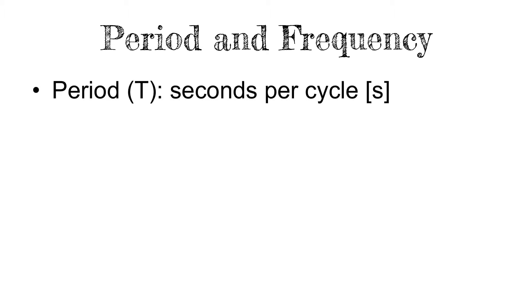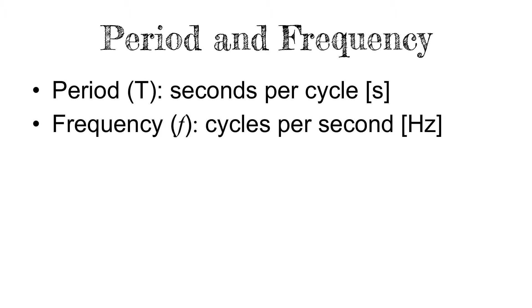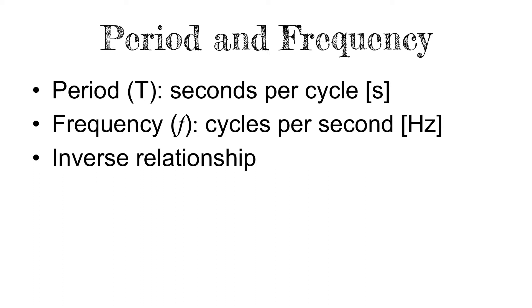Period is the amount of time per cycle, measured in seconds. Frequency is the number of cycles per second, which we express in hertz (Hz). There is an inverse relationship between the two: T = 1/f, or period equals one over frequency, and frequency equals one over period.